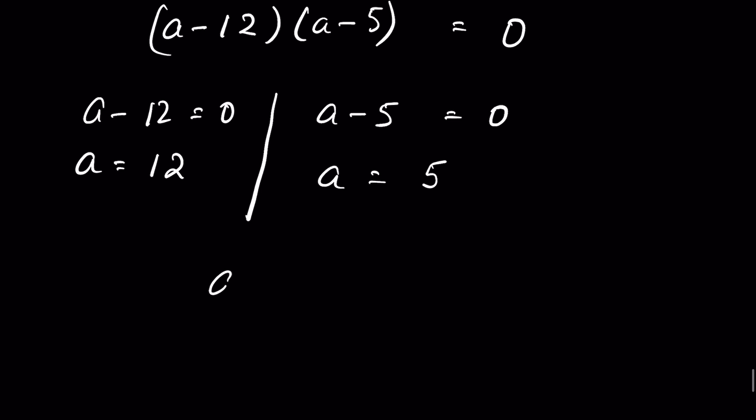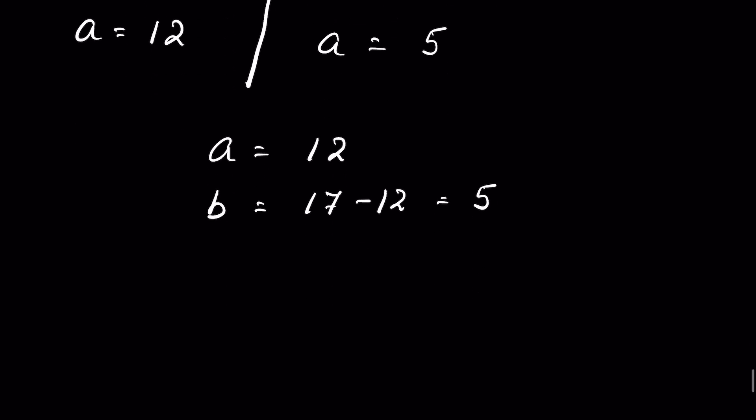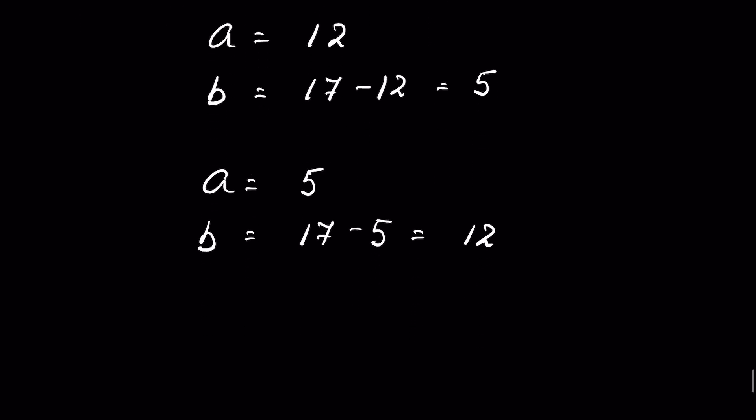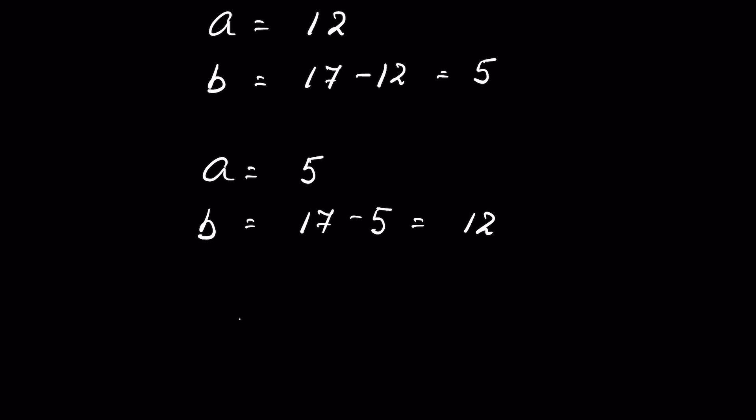We get two values for a. When a = 12, then b = 17 - 12 = 5. When a = 5, then b = 17 - 5 = 12. That means the two sides are 12 and 5. This is the answer: the three sides are 12, 5, and 13.